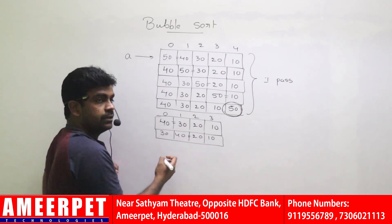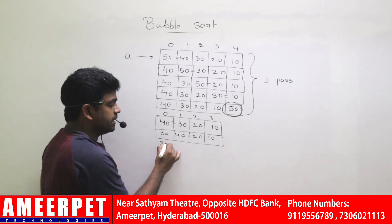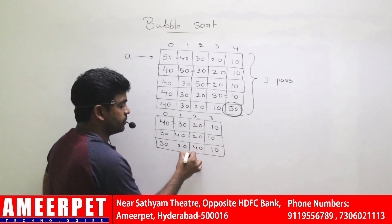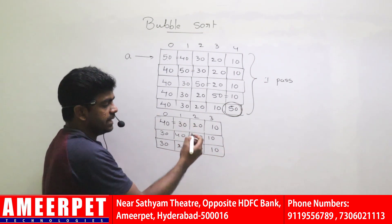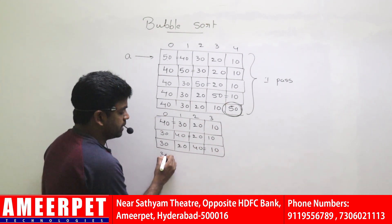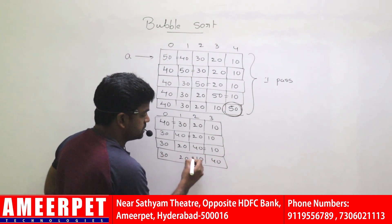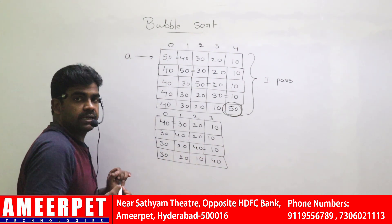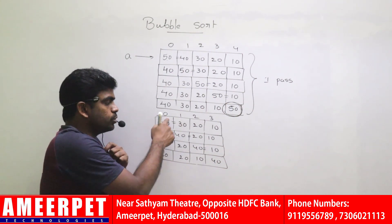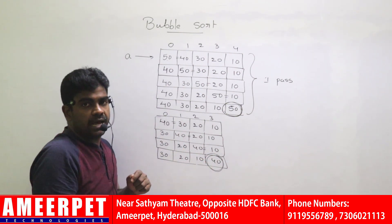Next, in the third comparison, 40 and 10 compare, values become 10 and 40. The array is now 30, 20, 10, 40. That is three comparisons total because four elements are there. The next highest element, 40, has bubbled to the last location.